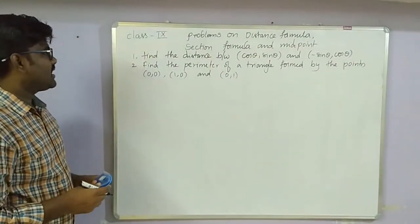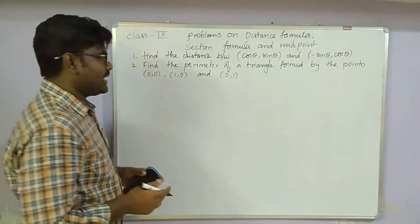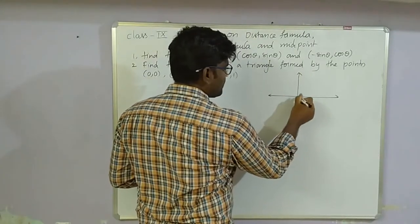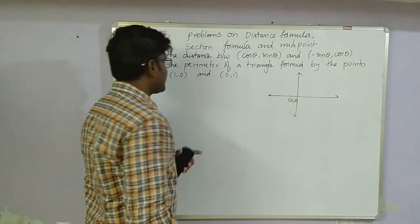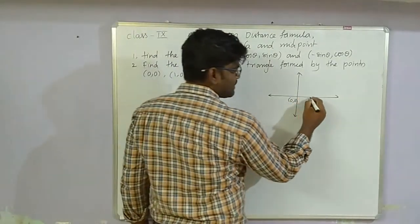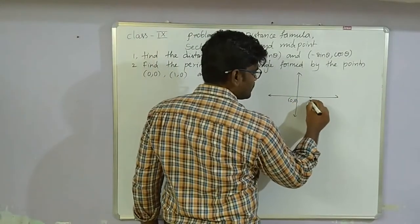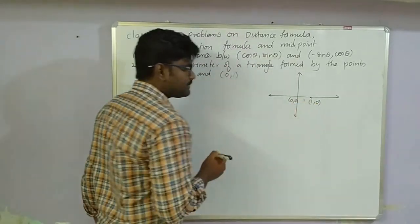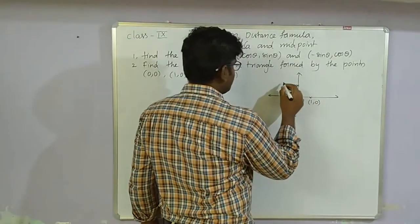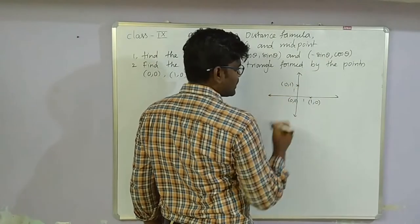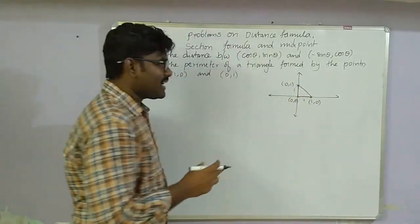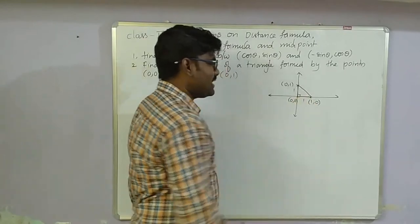When you plot these points on the Cartesian plane, (0,0) is the origin, (1,0) lies on the x-axis at 1 unit, and (0,1) lies on the y-axis at 1 unit. Joining these three points forms a right angle triangle.